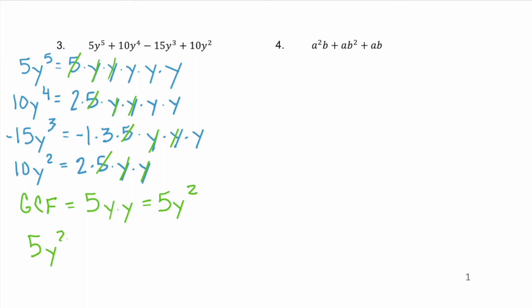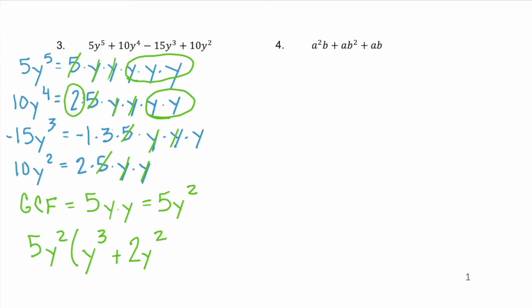When we factor out 5y squared, the first term leaves behind y times y times y, or y cubed. The second term leaves behind a positive 2y squared. The third term leaves behind negative 3y. And our fourth term leaves behind only a positive 2.